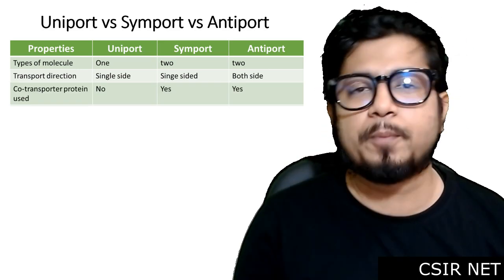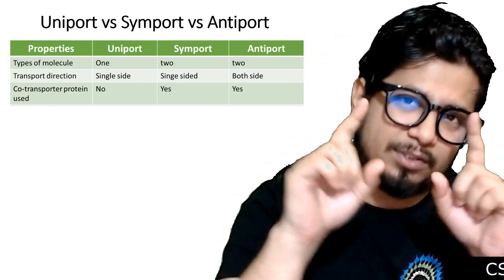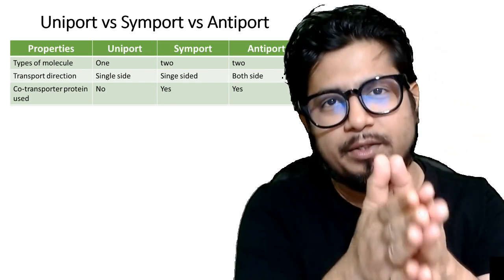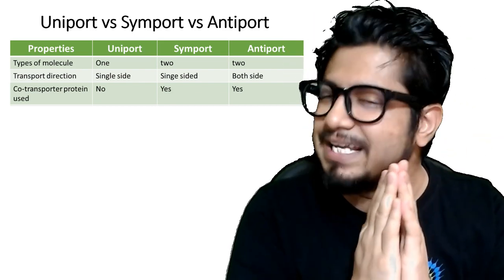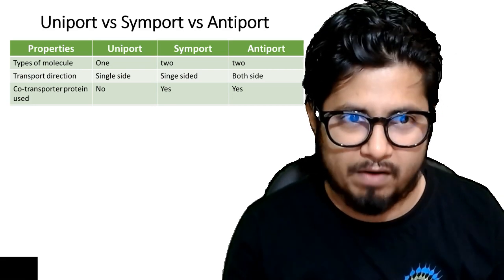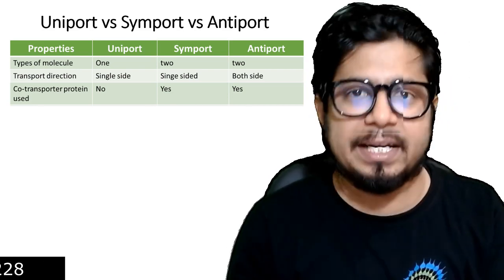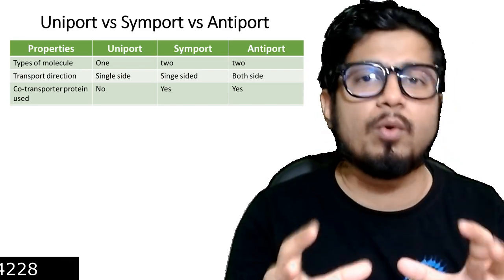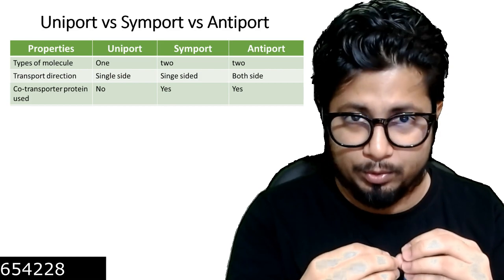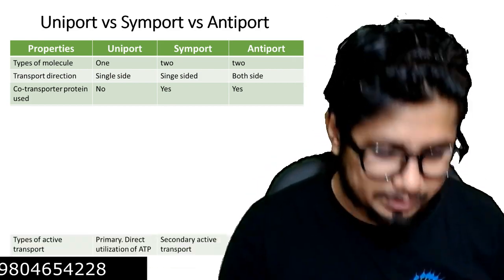Regarding co-transporters, in uniport, as there is only one molecule and the movement is only in one direction, there is no co-transporter — there is only a carrier protein involved. While in symport as well as in antiport, we need a co-transporter to transport two molecules in the same direction or two molecules in the opposite direction.